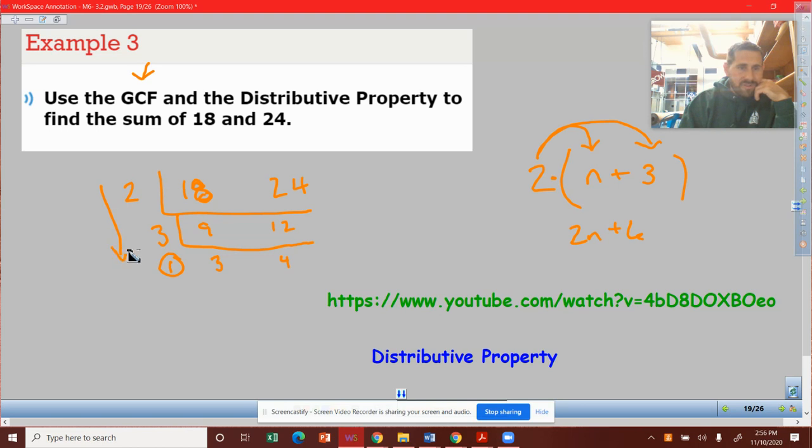If you remember as well, GCF is this vertical. So the GCF is 2 times 3 times 1. In other words, 2 times 3 is 6, 6 times 1 is 6. Our GCF is 6. So how can I use 6 in the distributive property to show 18 and 24, the sum of these numbers?